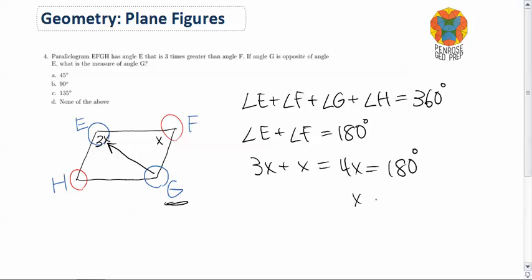Solving for x, we get that x is 180 divided by 4, which is 45. Therefore, we know that x has an angle measure of 45 degrees.